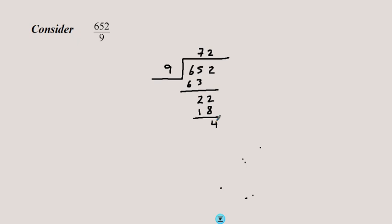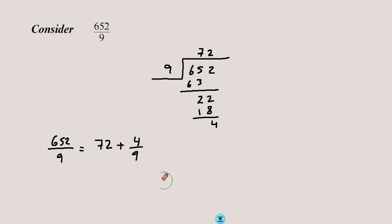This means that 652 over 9 is equal to 72, and since there is a remainder of 4, it's plus 4 over 9, because the 4 has still not been divided. We write this as a mixed number: 72 and four-ninths. The fact that we have a remainder here means that 9 is not a factor of 652.